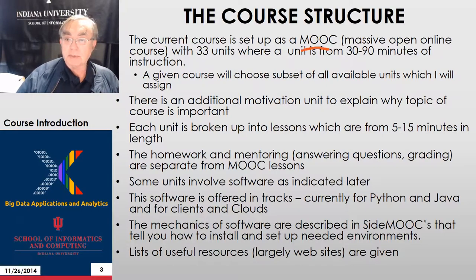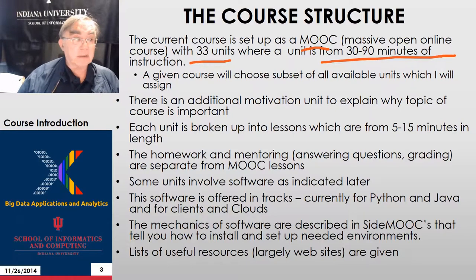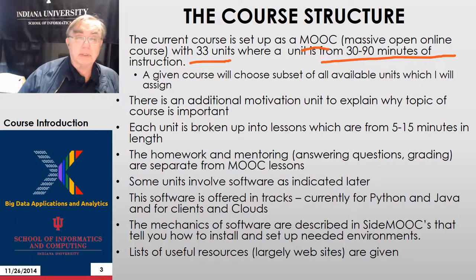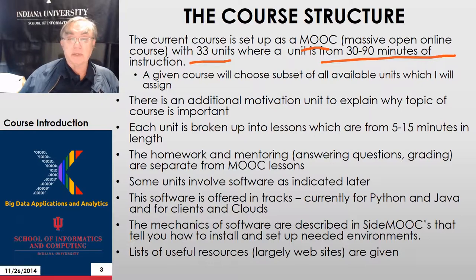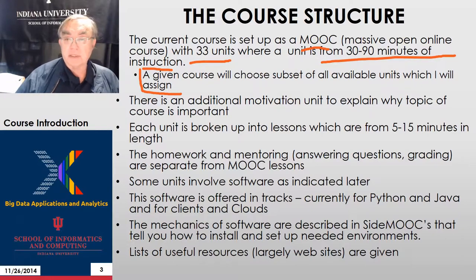The course is set up as a MOOC with around 33 units, where each unit is 30 to 90 minutes of instruction. They're chopped up into sections of connected units — for example, the physics section has four units, and this introduction has two units. When I teach a given course, I choose a subset of the units. With 30 hours total, that's more than needed for a full semester course, so I choose something like 85% of the total.